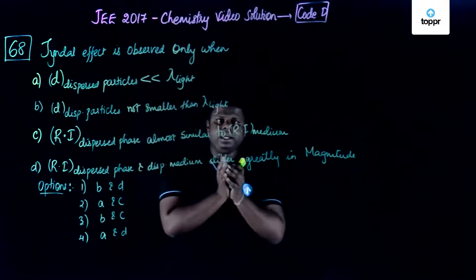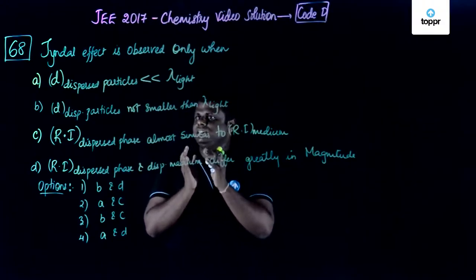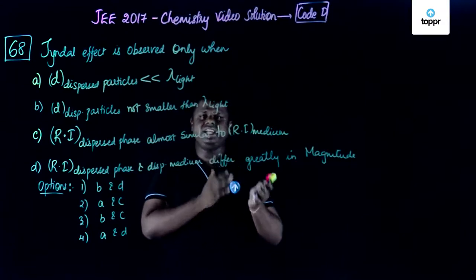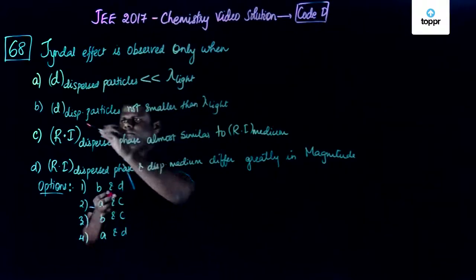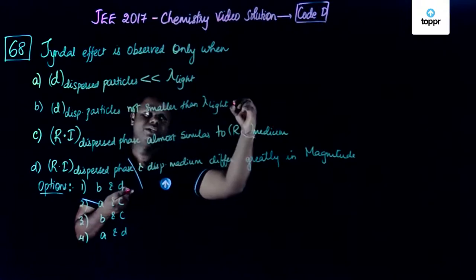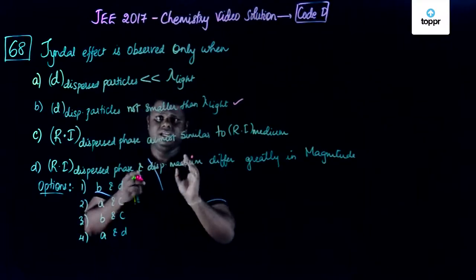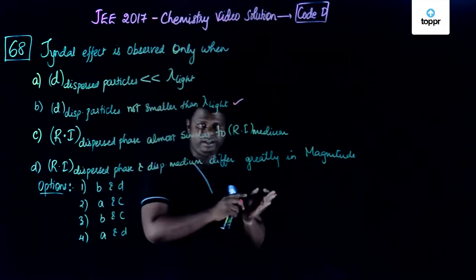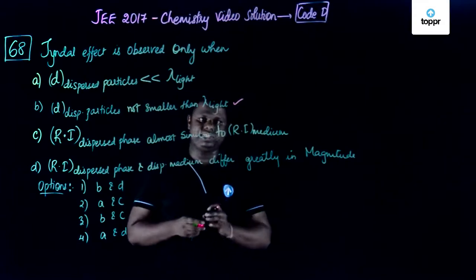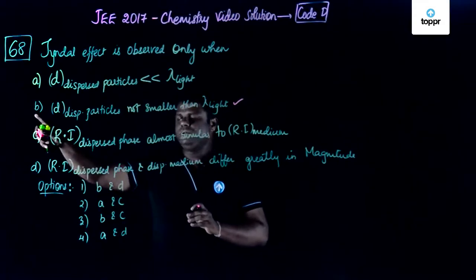Scattering would be possible only when the particle size is not smaller or at least equal. That means option B could be one of the choices. Diameter of the dispersed particles are not smaller than light wavelength. It's not saying they are greater - it could be even almost the same. So option B could be one of the options.